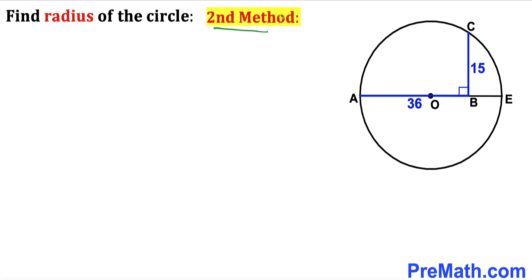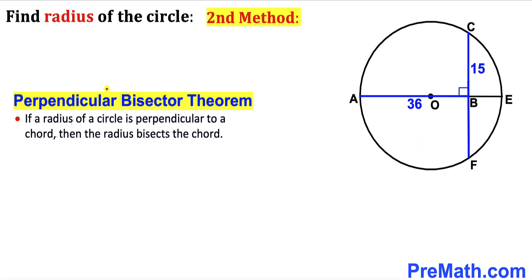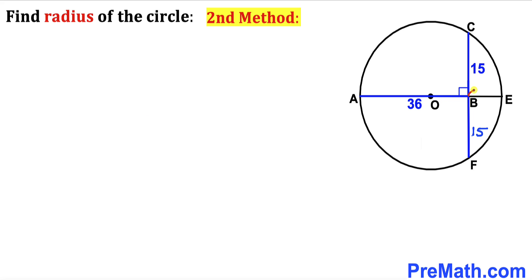Now for the second method. I have extended line CB all the way to point F. Recalling the perpendicular bisector theorem: if a radius of a circle is perpendicular to a chord, then the radius bisects the chord. Here, OE is the radius perpendicular to chord CF, so segment CB equals BF. Since CB is 15, BF is 15 centimeters as well.